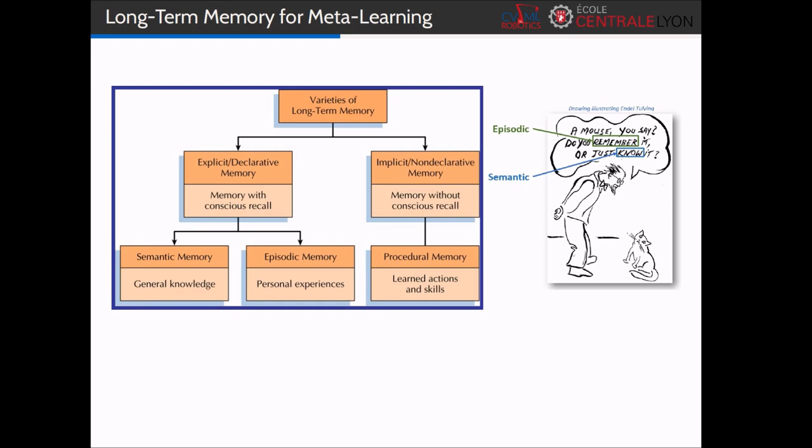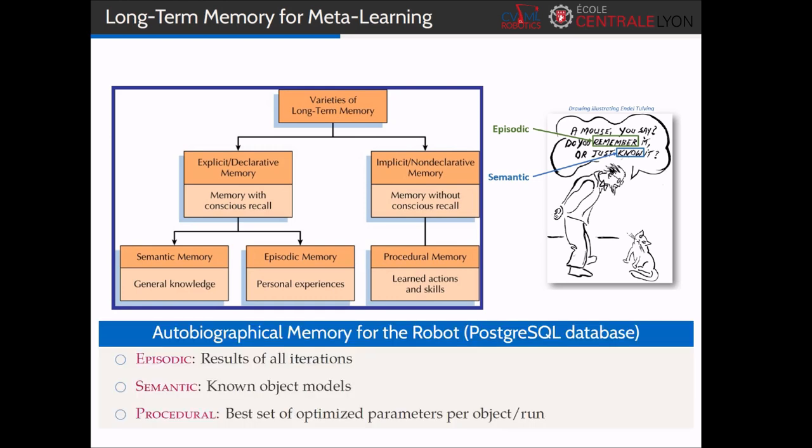An example of the procedural memory will be how to chase a mouse. When applied to our robot, these memories are implemented as a PostgreSQL database. We store in the episodic the parameters' values and scores for every iteration. The semantic will contain the CAD model of the objects known by the robot, that is, the ones that have been learned. It will be used to check the similarity between objects, with the hypothesis that objects that are similar between each other will be grasped properly with similar parameters' values. Eventually, the procedural will regroup all the best sets of optimized parameters per run.